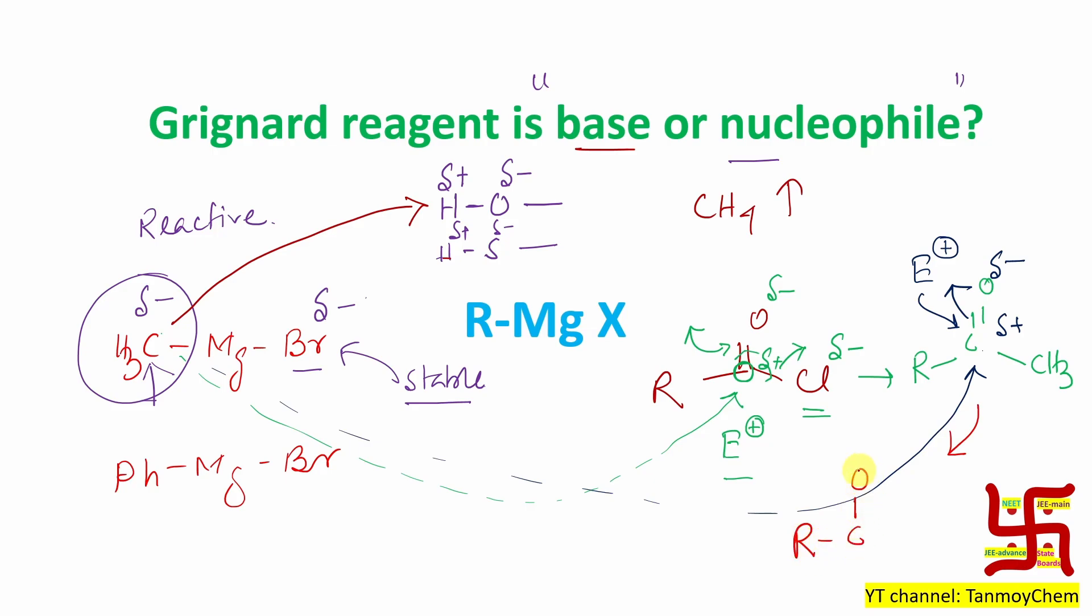So what will be the product? If you react, obviously it will be a tertiary alcohol. Means R, CO minus, now CH3, CH3. Now obviously if you do the workup, this alkoxide will be quenched and it will produce the corresponding alcohol, or technically if I say a tertiary alcohol.